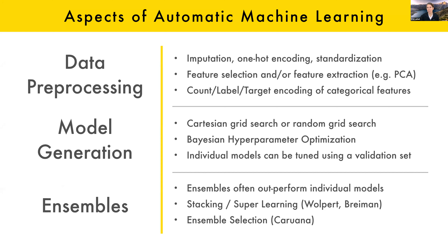In terms of model generation, the two main things we see are: big grid searches or random searches, and on the other end Bayesian hyperparameter optimization. There are also newer things like Hyperband and BOHB, which is Bayesian optimization and Hyperband merged into one algorithm. So there are all sorts of techniques that people use to generate or tune models. If you're in the camp that likes doing a lot of stacking, you can do ensembles — but for each use case you have to consider whether or not you want to do that.